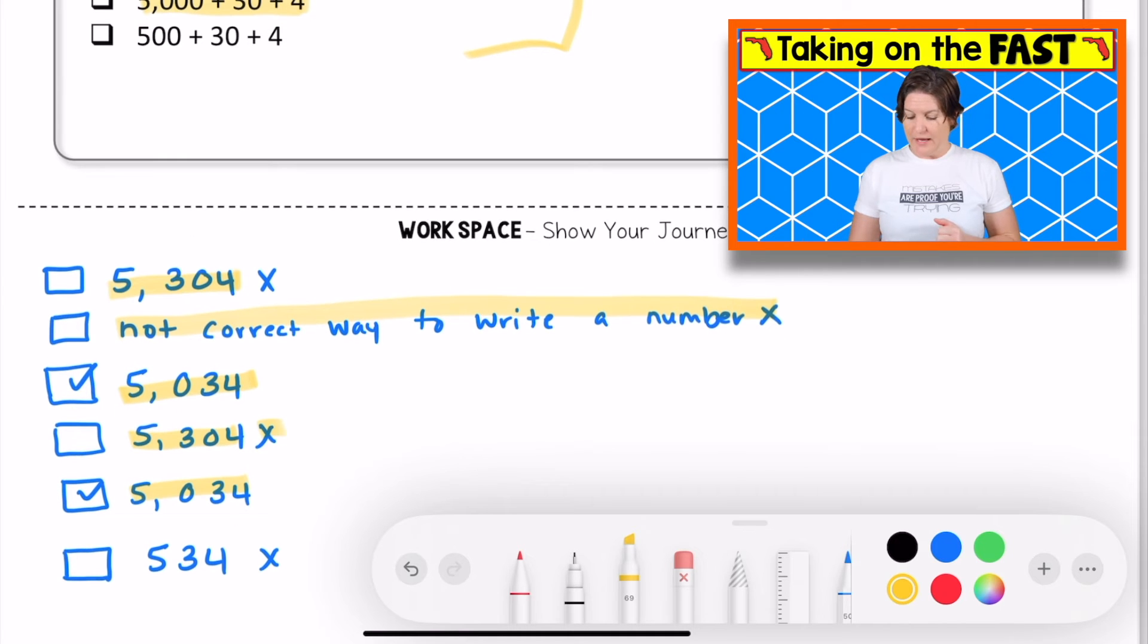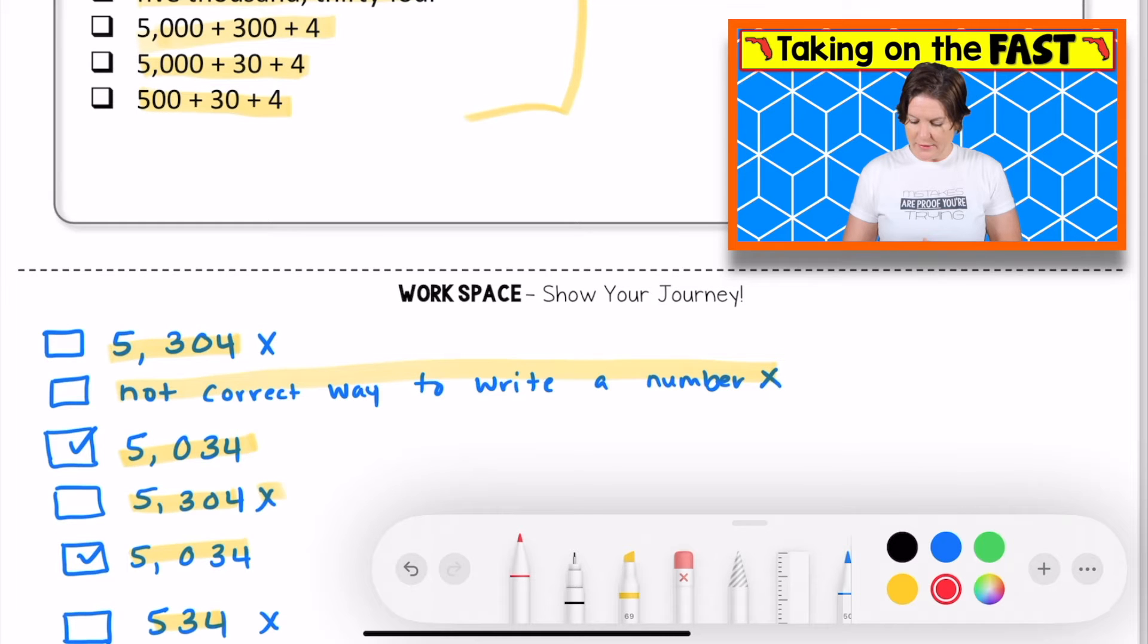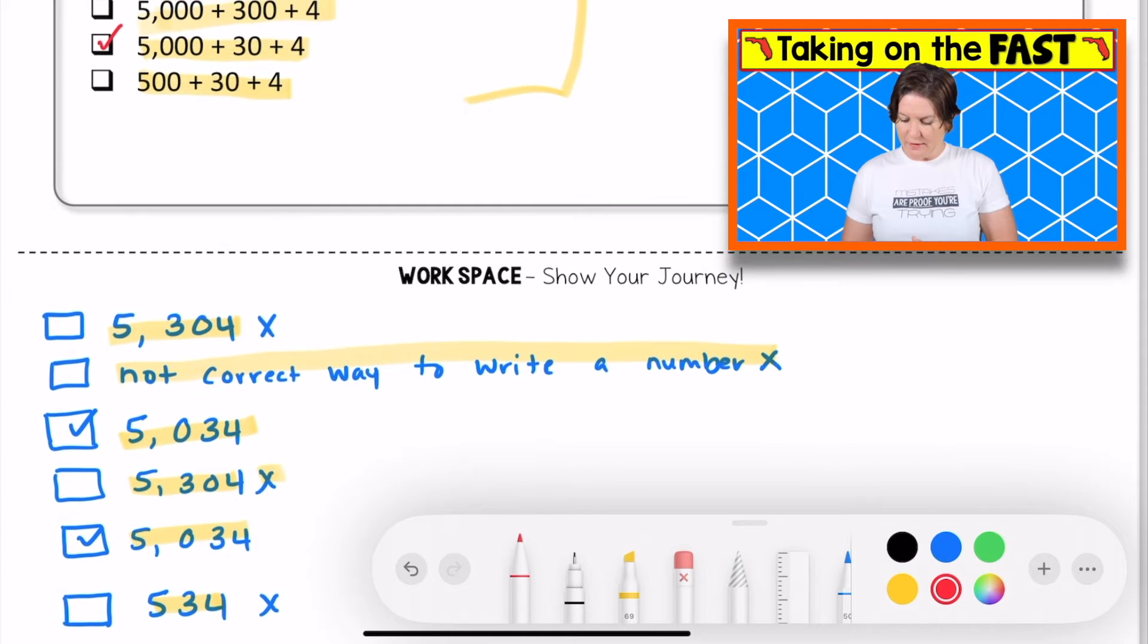And finally, we have 500 plus 30 plus 4, which when we compose it back together is 534. So I've worked all of these out. I've shown my journey on paper, and I'm going to go ahead and mark the third one and the second from the last. Making sure 5,034 and 5,034. Awesome.